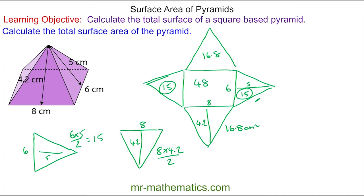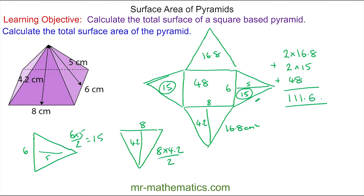So the total surface area is two lots of 16.8, plus two lots of 15, plus the rectangular middle which is 48. So this brings the total to 111.6 centimeters squared.